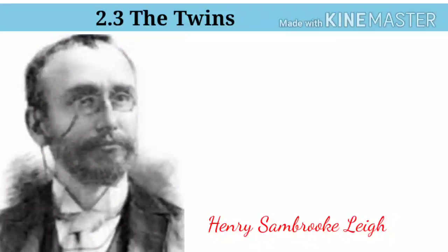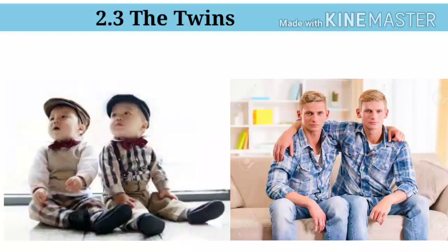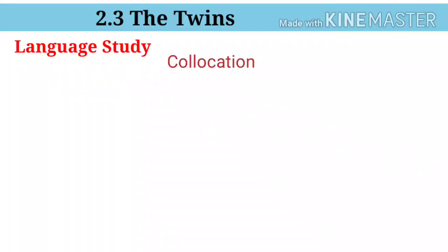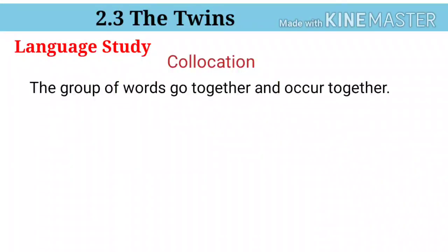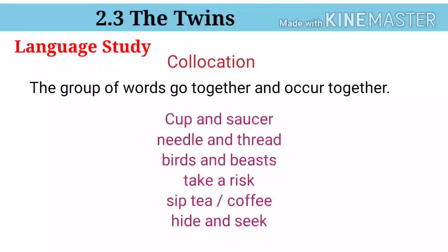The Twins. This poem is written by Henry Sambruck. It is a humorous poem about a pair of twin brothers. Language study — collocation: a group of words that go together and occur together. For example: cup and saucer, needle and thread, birds and beasts, take a risk, sip tea or sip coffee, hide and seek, etc.